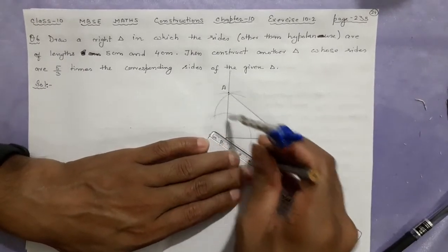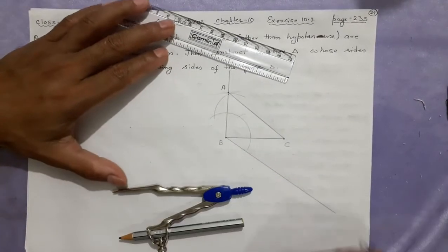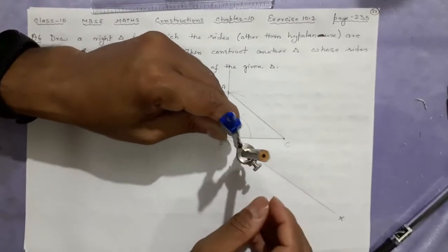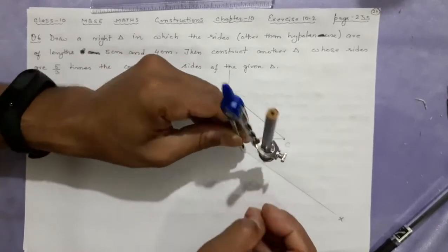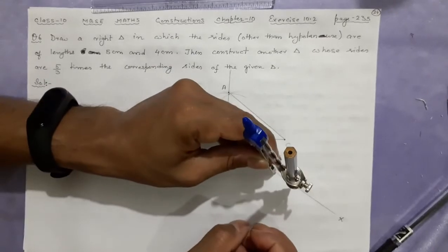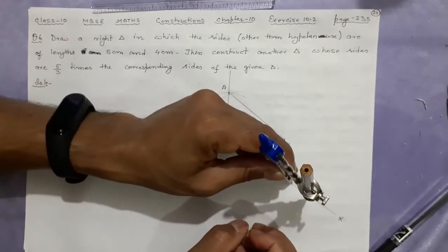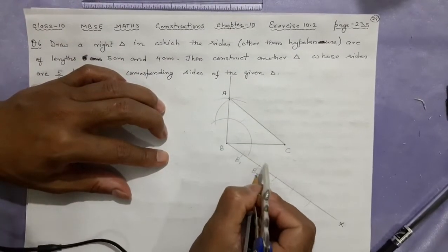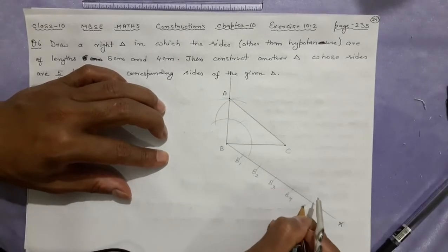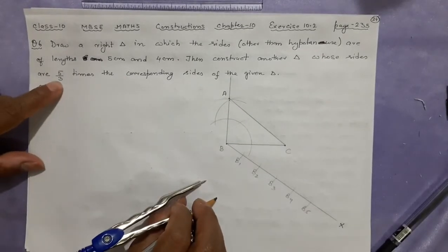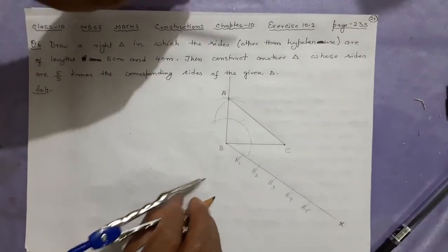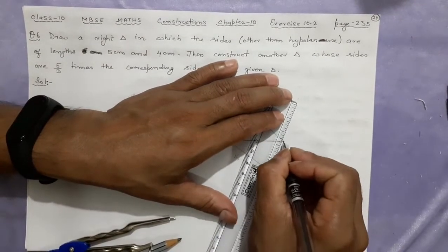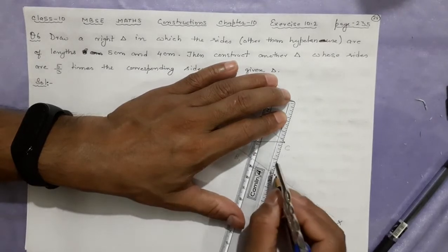This is the acute angle — give it a name X. Five times you have to cut equally: one, two, three, four, five. Done. This will be B1, B2, B3, B4, B5. Which one will you join to C? That is the third one — B3 will be joined to C. Join B3 to C with a dash line.